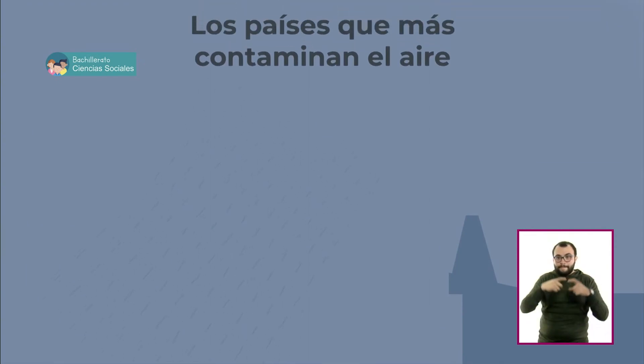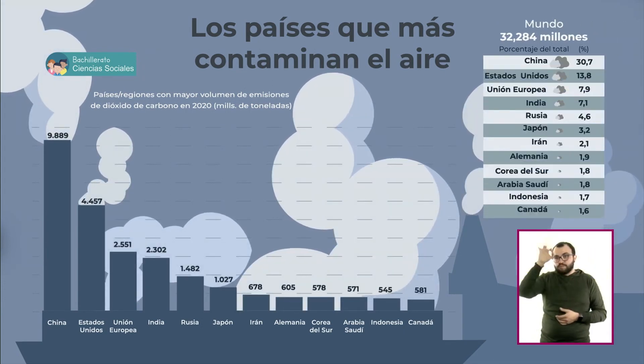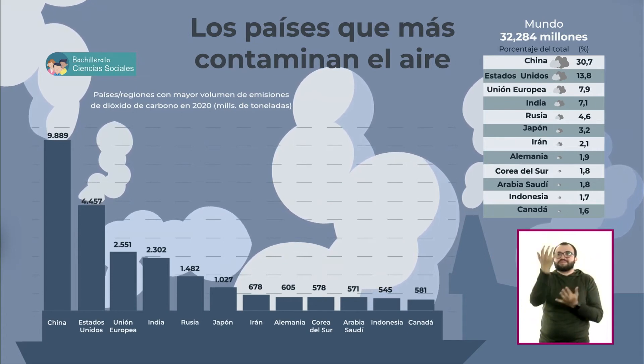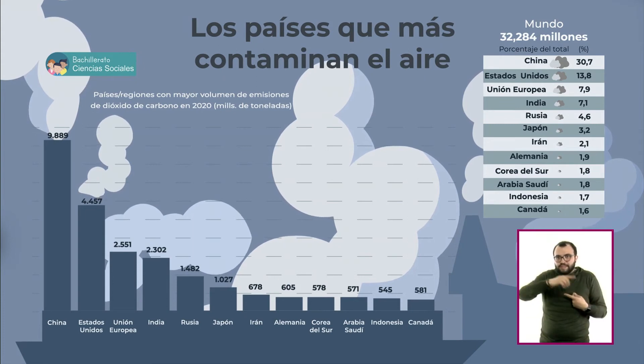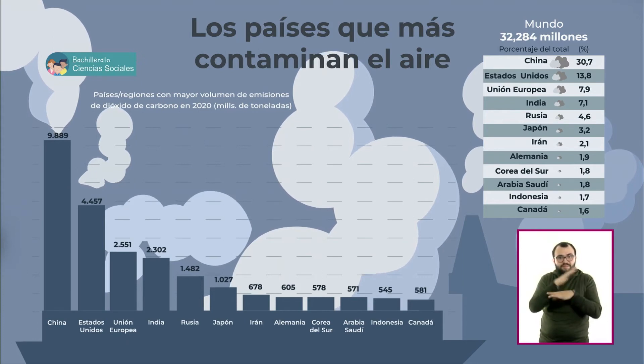Las grandes ciudades son las que más contribuyen al cambio climático. De acuerdo con ONU Hábitat, las metrópolis consumen el 78% de la energía mundial y producen más del 60% de las emisiones de gases de efecto invernadero. La enorme cantidad de personas que dependen de los combustibles fósiles hace que la población sea altamente vulnerable. Las emisiones mundiales de carbono deben reducirse en un 45% para 2030 con respecto a los niveles de 2010 y seguir disminuyendo para alcanzar cero emisiones netas para 2050. Estos planes nacionales ayudarán a los países a alcanzar el objetivo mundial del Acuerdo de París.